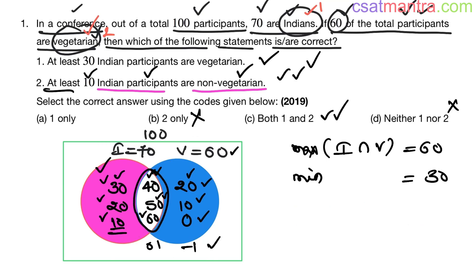Friends, I have taken around 10 minutes to solve this problem. These kinds of problems are asked every year — at least one or two questions. I have explained everything in detail. If you don't get some part, please pause and watch it again. If you still don't understand, please comment below and we will be glad to help. You must be able to solve these problems with ease. Identify the sets, draw the Venn diagram, and make use of the formulas. Convert the word problems into mathematical terminology — for example, 'Indians who are vegetarian' means I∩V. That is very very important.